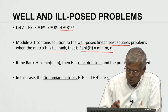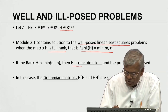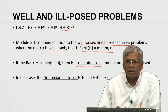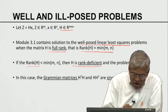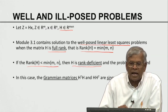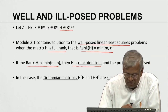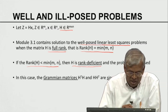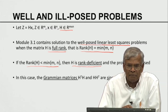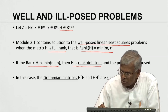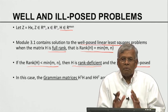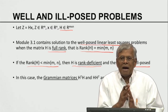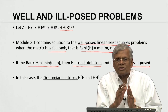Now we are considering the complementary case: what happens when H is rank deficient? When the rank of H is not equal to the minimum of M and N, but is less than the minimum of M and N — in the overdetermined case it is not N but less than N; in the underdetermined case it is not M but less than M. Such problems are called ill-posed problems.